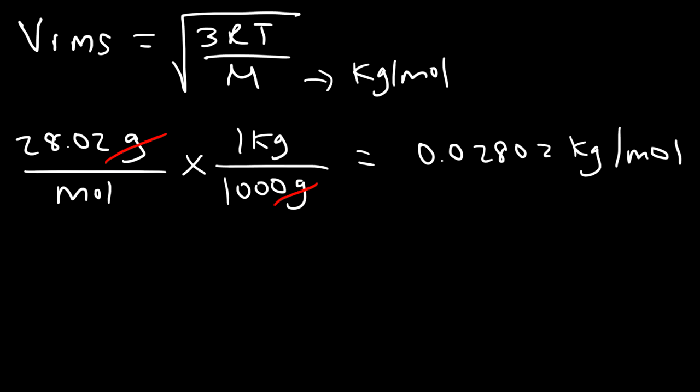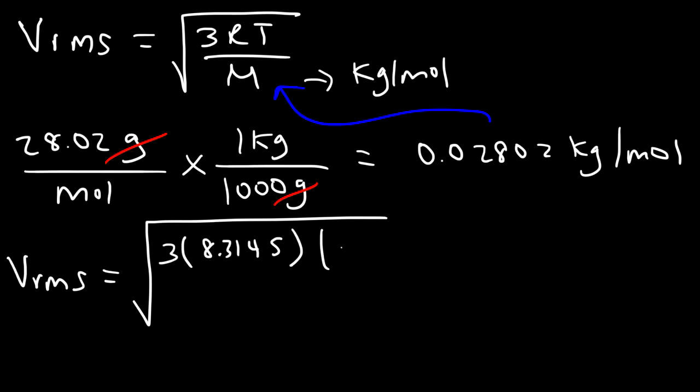So this is the value that we're going to plug into this formula. So the root mean square velocity is going to be the square root of 3. And R is going to be 8.3145. And the temperature is still 300 Kelvin divided by the molar mass of 0.02802. So this will give you the same answer of 517 meters per second.